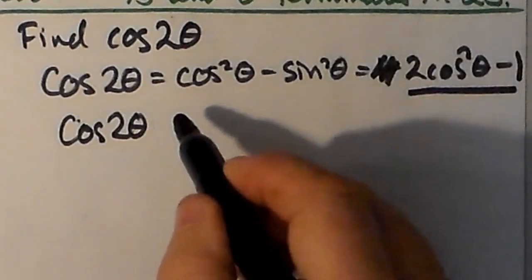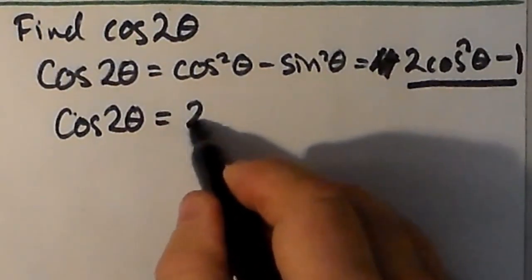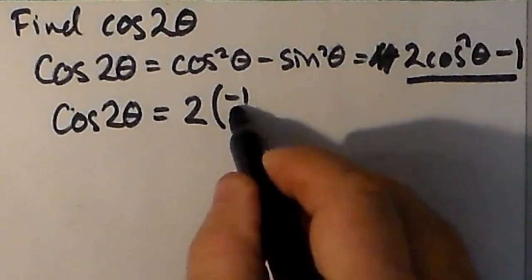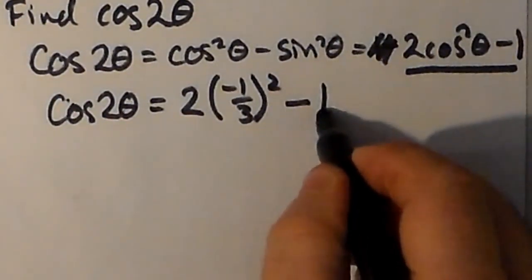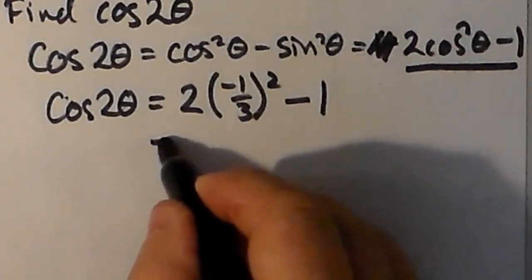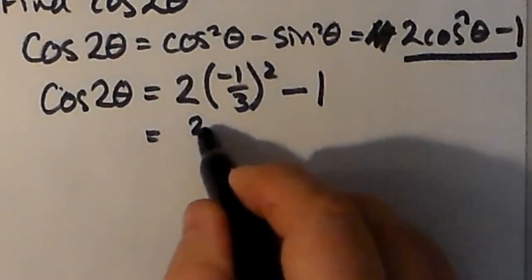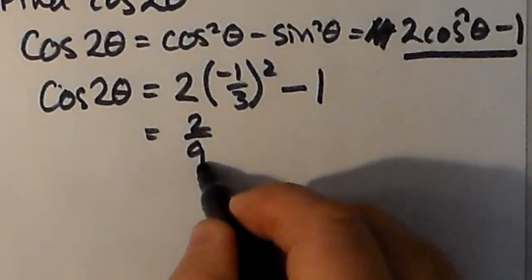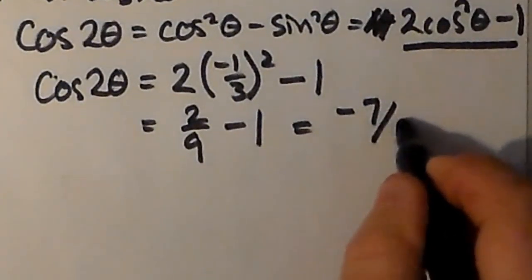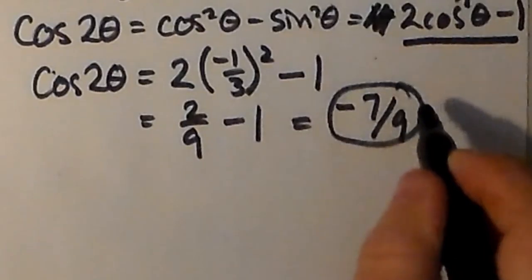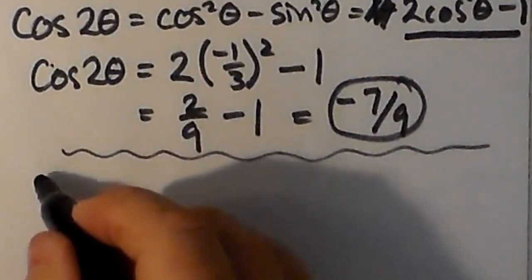By substitution, we already know what cosθ is, so squaring it is just taking negative 1/3 and squaring it, then multiplying by 2, and then subtracting 1. Negative 1/3 squared is 1/9. 1/9 times 2 is 2/9. We subtract 1 — that's subtracting 9/9 — so 2 minus 9 is negative 7, giving us negative 7/9.